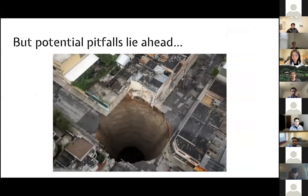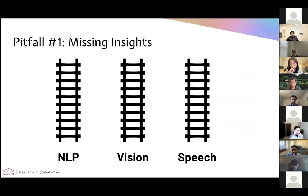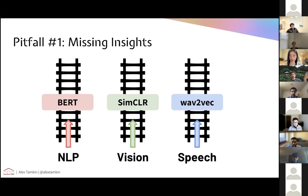Despite all of these trends and progressions in machine learning, there are some potential pitfalls that really lie ahead for the development of self-supervised learning. One is that many of these developments in different fields — in NLP, in vision, in speech — are proceeding along somewhat parallel tracks. You might have the same machine learning architectures like transformers being used across different fields, but the particular self-supervised learning algorithms are being developed independently. You have advances in NLP, advances in vision, and separate techniques used to train these models in a self-supervised way in each of these different fields.